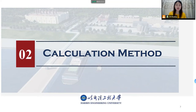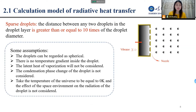The second part covers the calculation methods used in this paper. First, we should understand what sparse droplets are. The distance between any two droplets in the droplet layer is greater than or equal to 10 times the droplet diameter — this constitutes a sparse droplet condition. For sparse droplets, we can make some simplifying assumptions: the droplet can be regarded as spherical, there is a low temperature gradient inside the droplet, the latent heat of vaporization will not be considered, and the change in concentration size of the droplet is not considered.